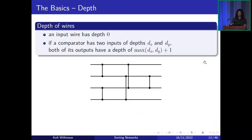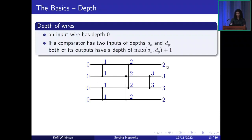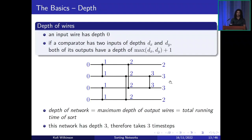Now I'll define the depth of wires in the network — this is an inductive definition. An input wire starts off having depth zero. If a comparator has two inputs of depths dx and dy, both of its outputs have a depth of max(dx, dy) + 1. Starting with zero on all wires, after the first set of comparators we take max(0, 0) = 0, add one, giving depth one on all wires. Similarly, max(1,1) + 1 = 2, and then max(2,2) + 1 = 3. The depth of the entire network equals the maximum depth of the output wires, and this equals the total running time of the sort. This network has depth three, so it takes three time steps to execute.